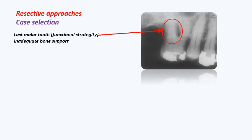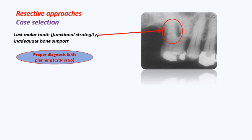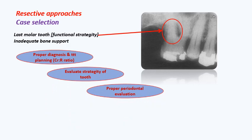Case selection for the resective approach is very meticulous. You must assess the strategic value of the tooth: is there adequate bone support? You must have a proper crown-to-root ratio. Proper diagnosis and treatment planning are essential — always be mindful of the crown-root ratio and the strategic value of the tooth.